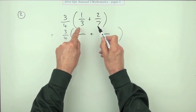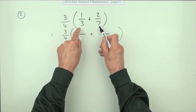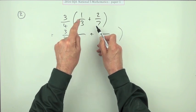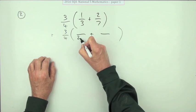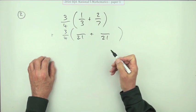You can't add them unless they're the same, so I need to find something that three and seven both go into. That'll be 21. There's nothing clever about that - three sevens are 21.